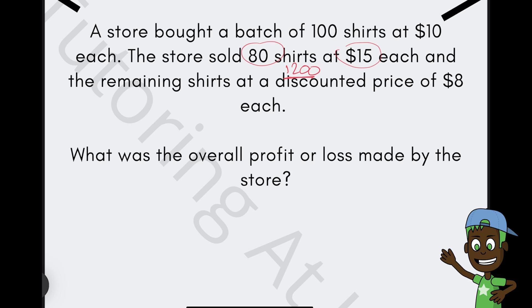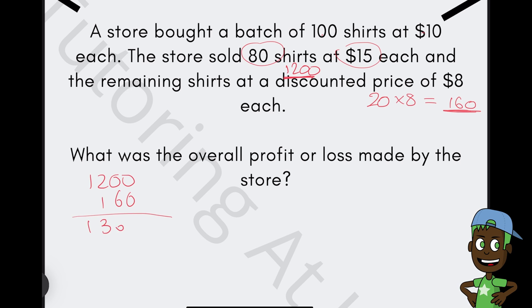And then the revenue from selling the remaining shirts at $8 each would be 100 take away 80, which gives us 20. We multiply that by $8 and that gives us $160. So now let's add that together. We have $1,200 and $160, which gives us $1,360.